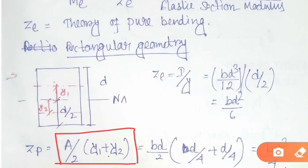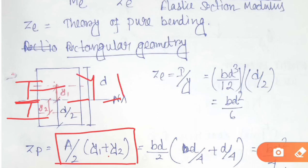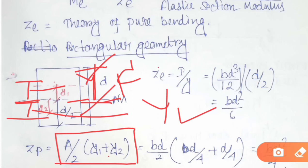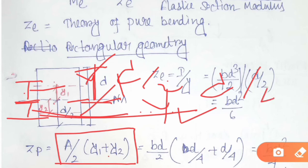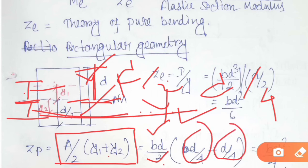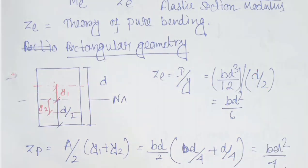The distance from the neutral axis is D/2, so Y1 = half of D/2 = D/4, and similarly below the neutral axis Y2 = D/4. The area of the rectangular geometry is B × D, so A/2 = BD/2. Therefore ZP = (BD/2) × (D/4 + D/4) = (BD/2) × (D/2) = BD²/4.